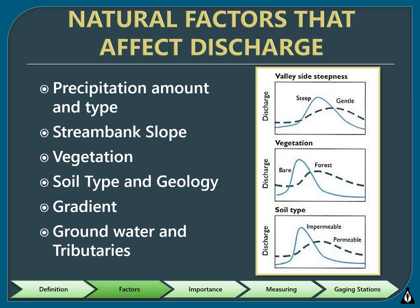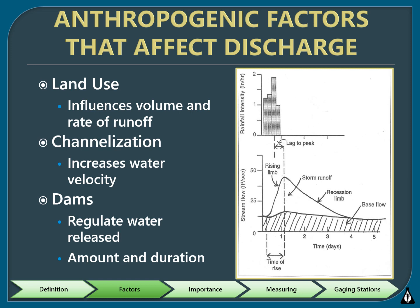Tributaries can also provide additional stream flow to a particular stream. Humans can also influence stream discharge. When vegetated areas and wetlands are converted to bare soil or impervious surfaces, the volume and rate of runoff increase dramatically during storm events, leading to flashy streams. Channelization is the straightening of a stream channel. This, along with the removal of woody debris, causes increased water velocity and erosional force. Water around dams can fluctuate quite a bit, altering physical and chemical conditions both upstream and downstream of the dam.